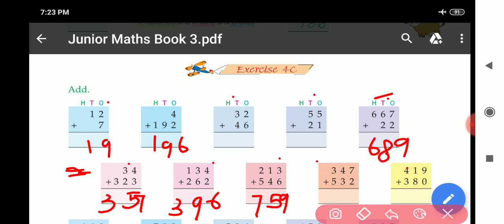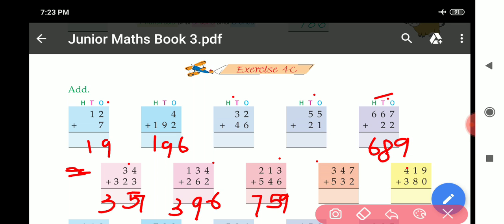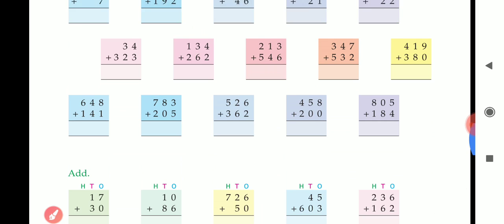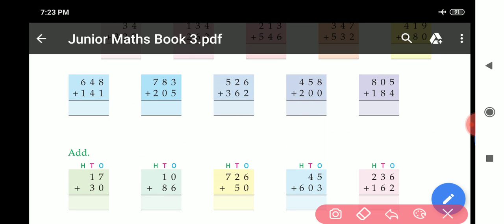These 2 parts you have to do yourself. Now move to next part. 8 plus 1, 9. 4 plus 4, 8. 6 plus 1, 7. Answer is 7, 8, 9.